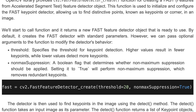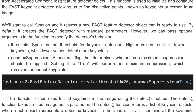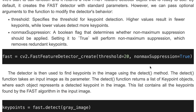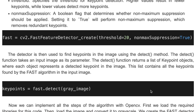However, you can change the optional parameters. There are two parameters. The first is threshold, which specifies the threshold for key point detection — higher values result in fewer key points, while lower values detect more. The second is non-maximum suppression, a boolean flag that determines whether non-maximum suppression should be applied. Setting it to true will remove redundant key points. The detector is then used to find key points in the image using the detect method, which takes an input image as its parameter and returns a list of key point objects.